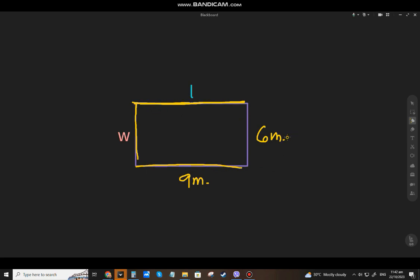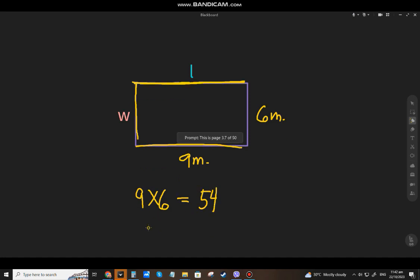So, area of the rectangle: 9 times 6 is 54. Meter times meter is square meters. So final answer for the area, that will be 54 square meters. So that's how we find the area of the rectangle.